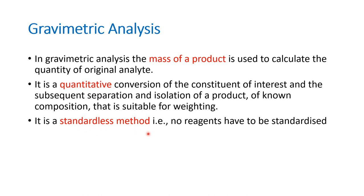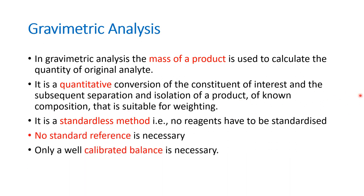It is a standardized method — no reagent has to be standardized. Very importantly, what is necessary in gravimetric analysis is a calibrated balance, because all parts of the analysis are done through weighing only. The samples will be weighed and the crucibles will be weighed. In every step of gravimetric analysis, it is the weight of the substance that matters, so a well-calibrated balance is a necessity. There is also a possibility we can test the purity of the product.